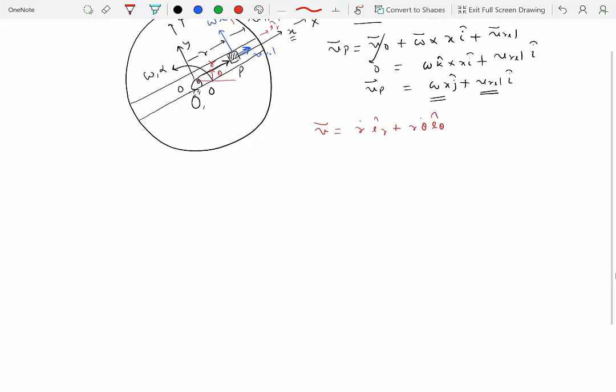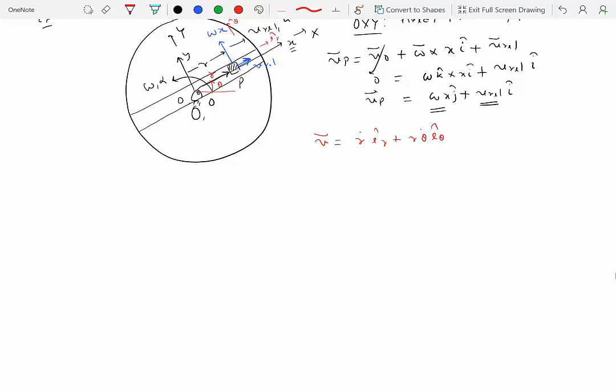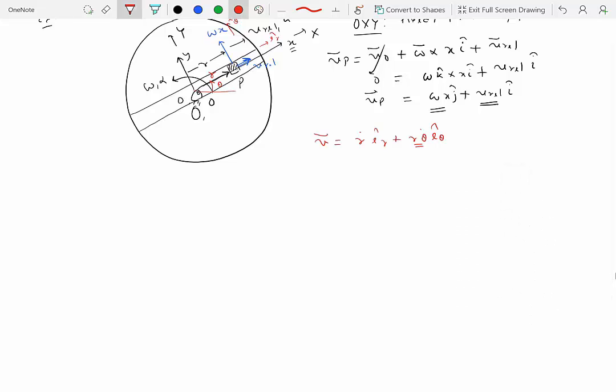and if you compare these two equations we have R theta dot which is same as omega X because omega is theta dot and V relative is nothing but the rate at which R is changing. So the rate at which the distance between O and P is changing is same as R dot. So we obtain the same thing.